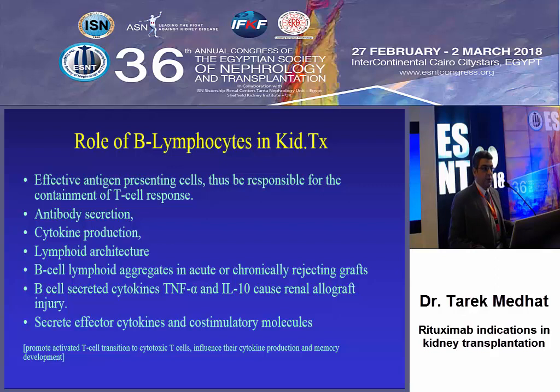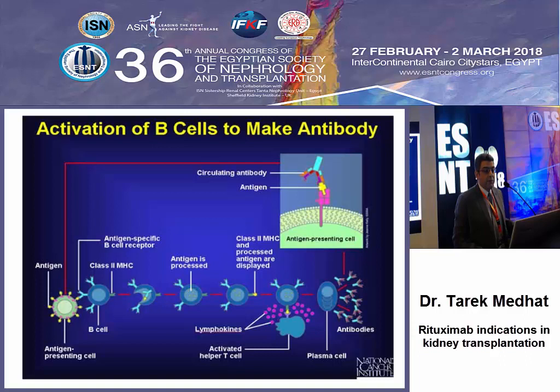B lymphocytes act as effective antigen-presenting cells, involved in antibody secretion, cytokine production, lymphoid aggregation in acute and chronic allograft rejection, and secretion of cytokines. Activation of lymphocytes to form antibody is started by antigen-presenting cells via MHC class II, then proceeds through several steps until formation of plasma cells and secretion of antibodies, activated by T-helper lymphocytes.